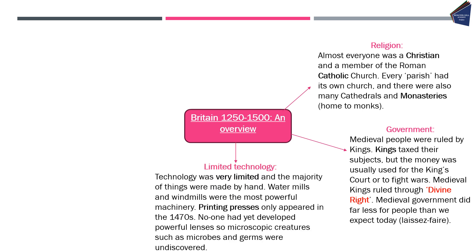Technology during this time period is very limited, with the majority of things made by hand. Water mills and wind mills were the most powerful machinery available. Printing presses were probably the first real technological development, but these don't appear until the 1470s and weren't very widespread — right at the end of our time period. No one had yet developed powerful lenses, so microscopic creatures such as microbes and germs had not been discovered, leaving people very unaware of what was causing illness.